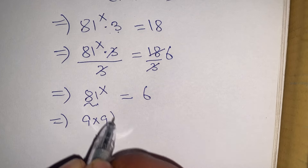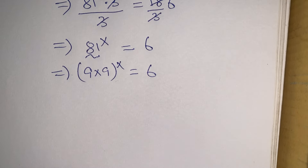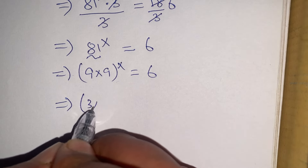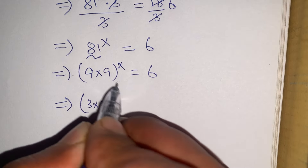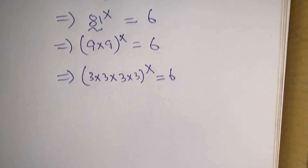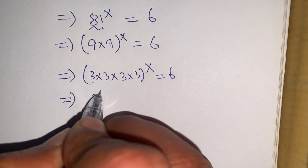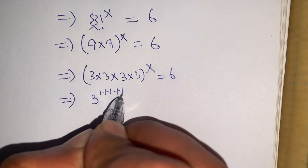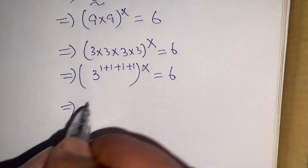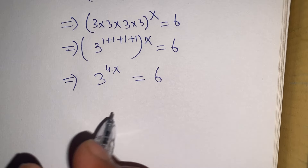Now 81 can be written in terms of 3. We write 81 as 9 times 9, and each 9 can be written as 3 times 3. So 81 to the power x becomes (3 times 3 times 3 times 3) to the power x. Since the bases are the same, we add the powers: 3 to the power (1+1+1+1), which gives 3 to the power 4x, equal to 6.